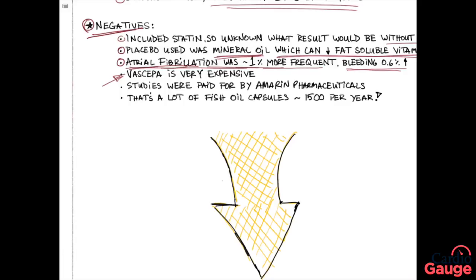These studies, of course, were paid for by the pharmaceutical company, so conflict of interest is always there—Amarin Pharmaceuticals. And you know what, let's think about that's 4 grams of fish oil a day, 1,500 kind of biggish capsules. That's a lot of fish oil.